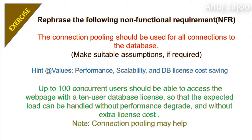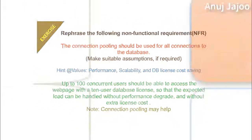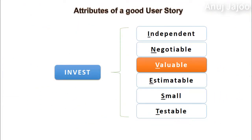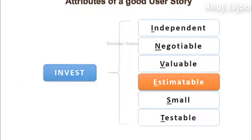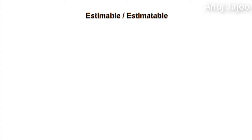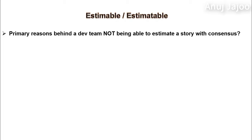Non-functional requirements are horizontal requirements, meaning they are common for multiple stories. Hence the type of user need not be mentioned while writing such stories. The next attribute is Estimatable. It is important for the development team to come up with an approximate size of the story by consensus. Can you guess the primary reasons behind the development team not being able to estimate the efforts required for a story?